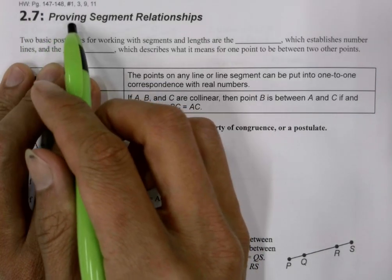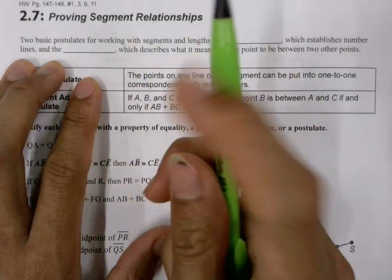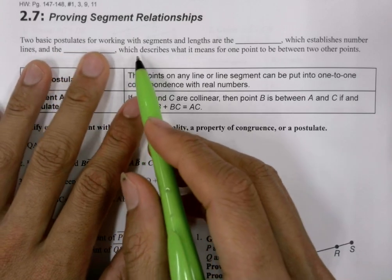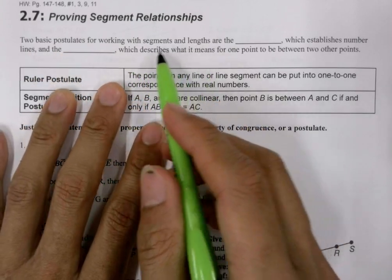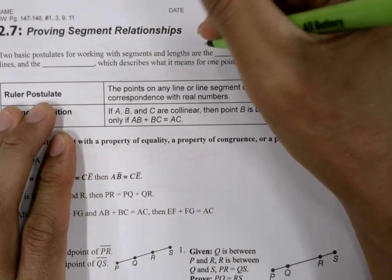In Chapter 2.7, we're proving segment relationships. Two basic postulates for working with segments and lengths are the ruler postulate,